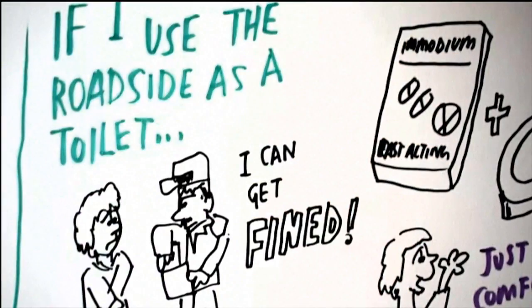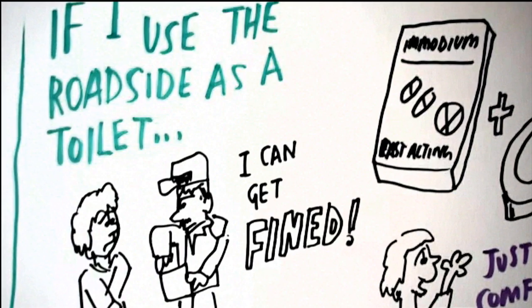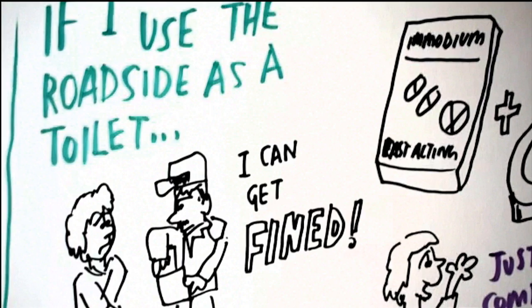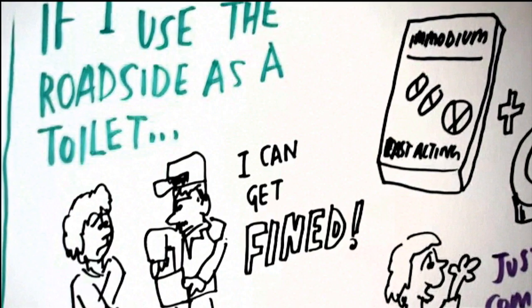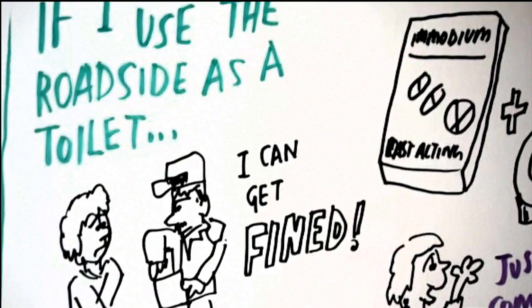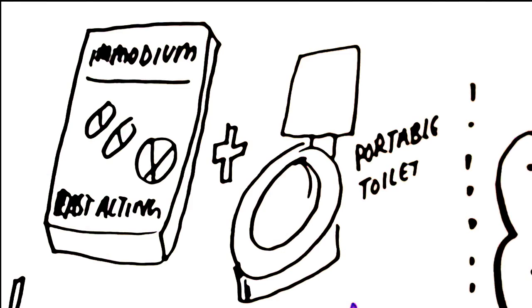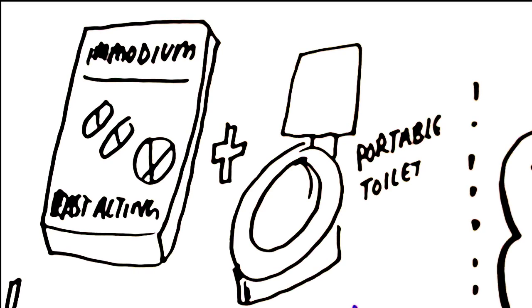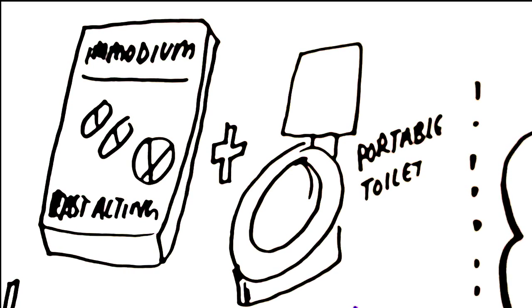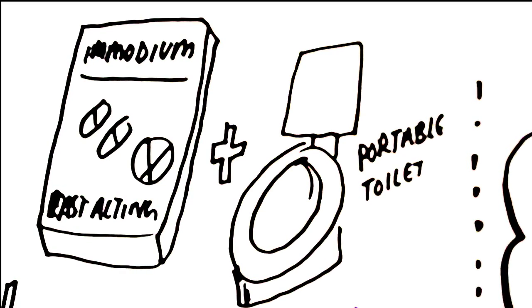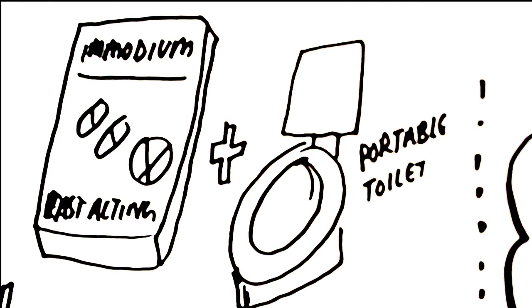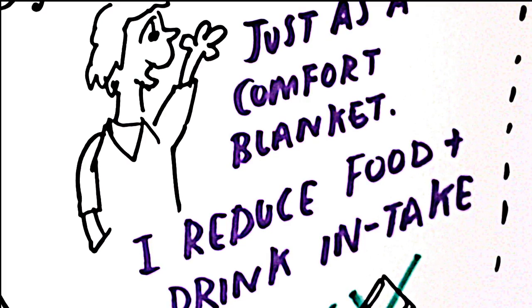If I use the roadside as a toilet without my trusty tent, then I can be fined by any police officer who catches me. I go armed with Imodium, a trusty friend indeed. I carry a portable toilet complete with tent cover, though thankfully I've not had to use it yet. But it's my comfort blanket, and I reduce my food and fluid intake.